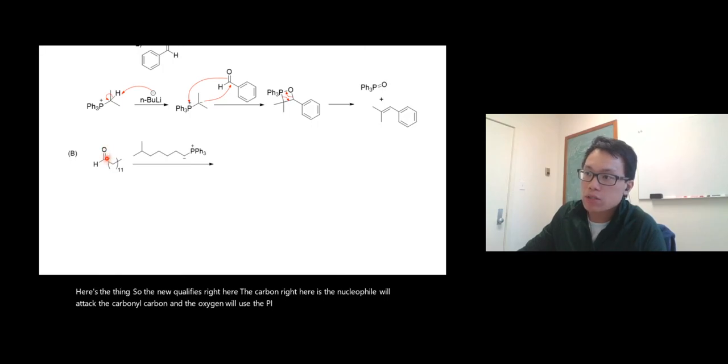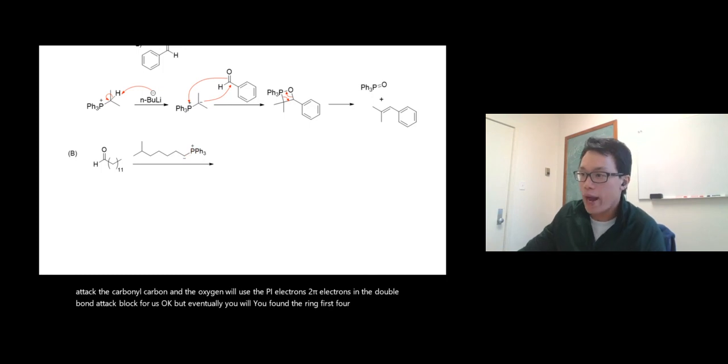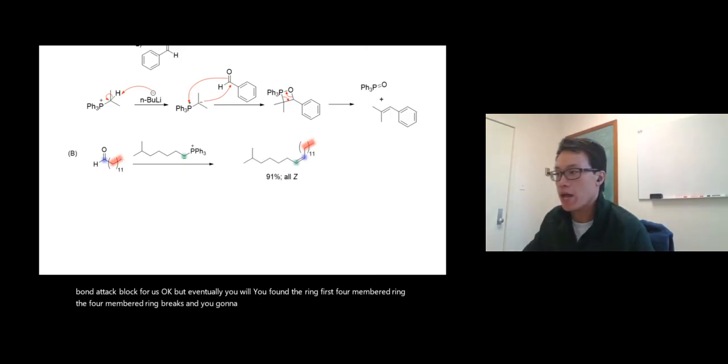Eventually you'll form the four-membered ring first. The four-membered ring breaks and eventually you will get this compound with the double bond right there.